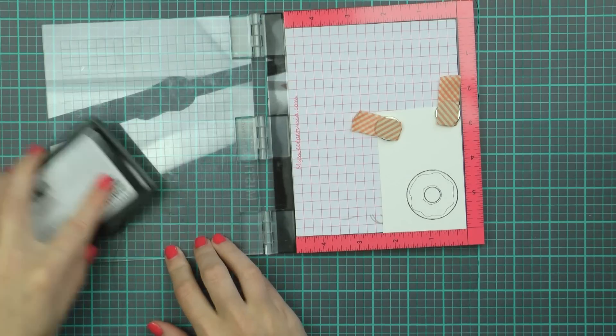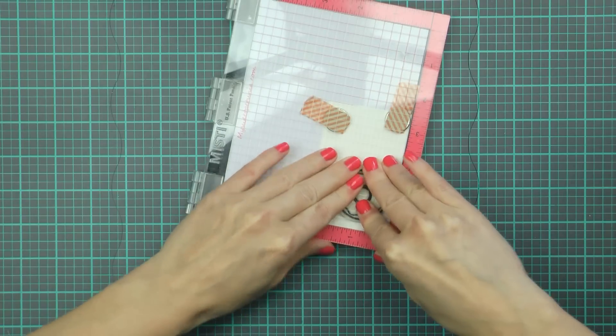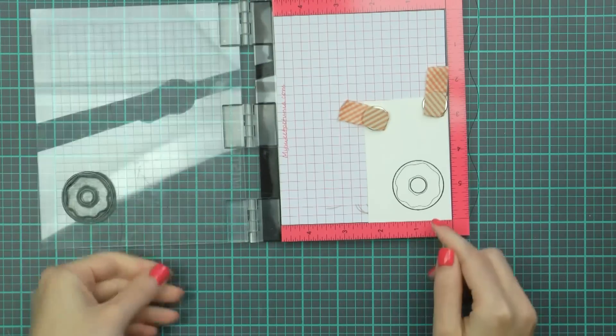First I'm going to stamp the large donut and I'm using Simon's Intense Black ink, it's waterproof among other things so it works well for watercolor as it won't bleed.